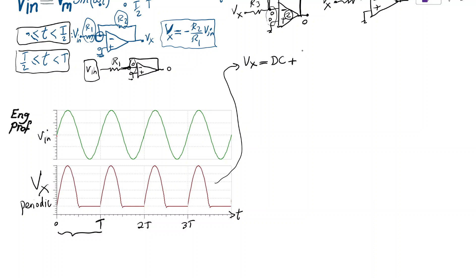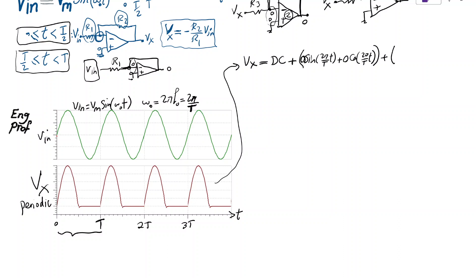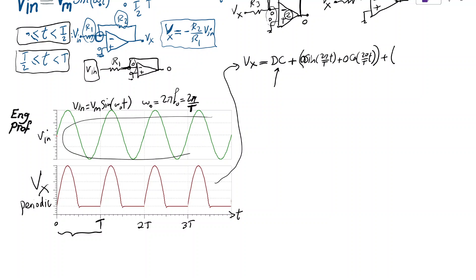The Fourier series of VX has a sinusoidal component at the fundamental frequency omega_naught (= 2π/T), a cosine component at omega_naught, a component at double the frequency (2*omega_naught), a triple-frequency component, and so on. These are the harmonic components of the half-wave rectified signal.